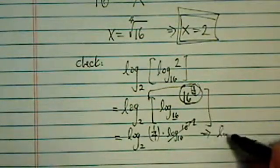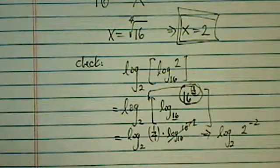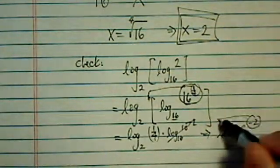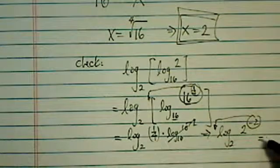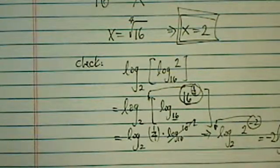And then we have log base 2 of a quarter. A quarter is 2 to the minus 2. So similarly, this exponent comes in the front. I have log base 2 of 2.